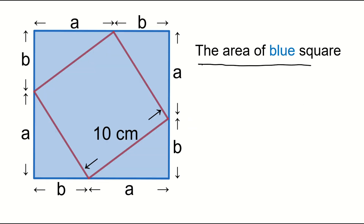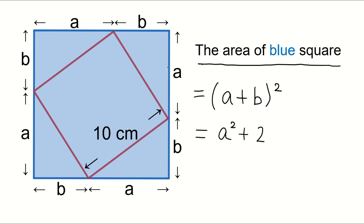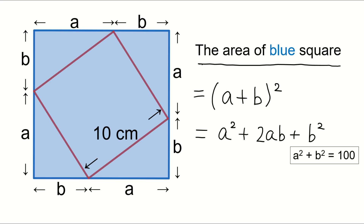The area of the blue square is (A plus B) squared. Expanding this, we get A squared plus 2AB plus B squared. We already know A squared plus B squared equals 100. So the area of the blue square is 2AB plus 100. How do we find AB?